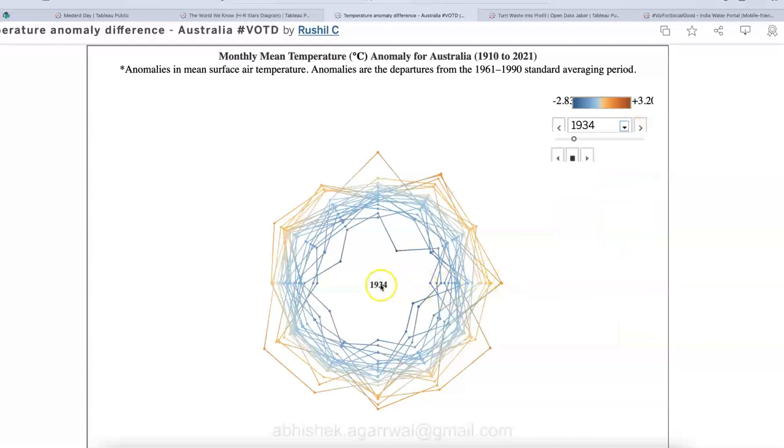And if you hover over, this is 1910, then 1913, 1950, 1914, indicating a higher temperature over here. So anomalies in mean surface temperature, which you have in different years, anomalies are the departures from 1961 to 1990, standard averaging period.